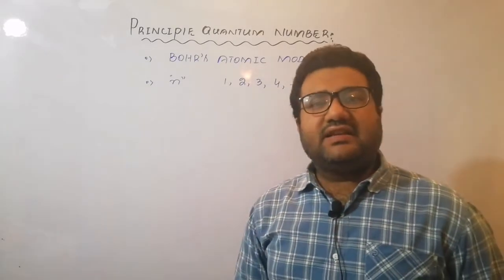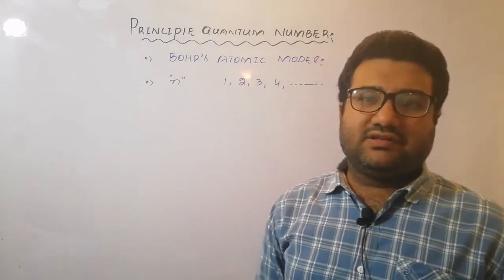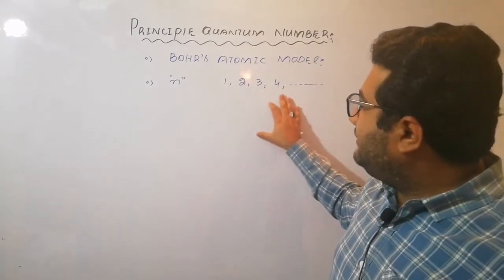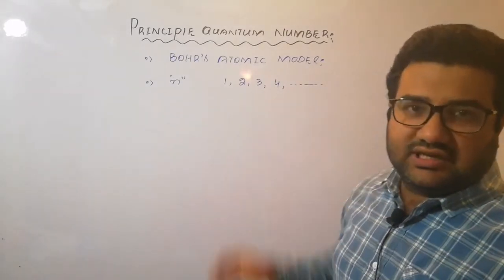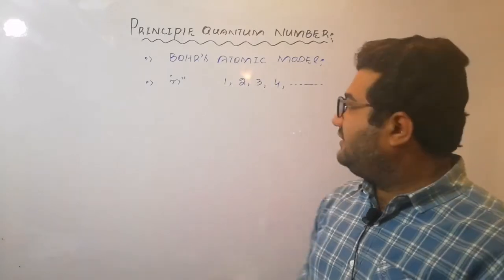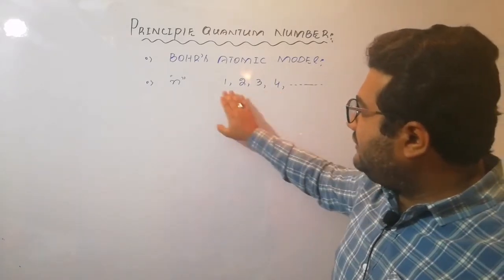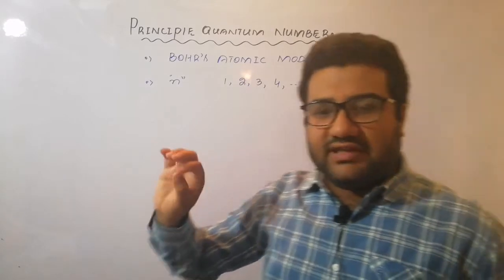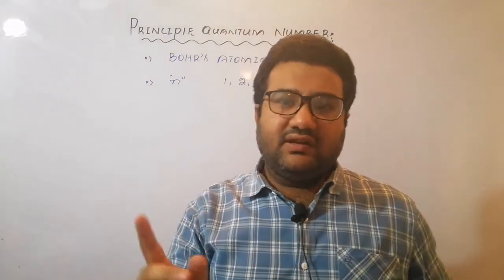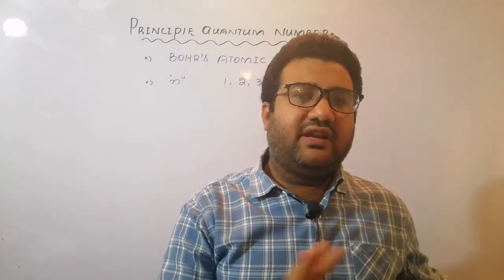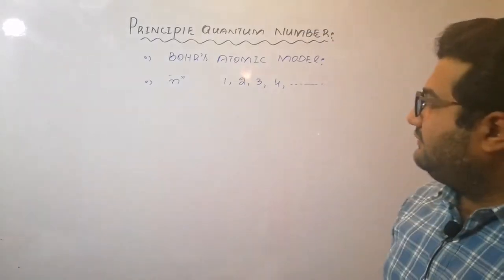This lecture is basically for FSC students, so I will keep myself restricted up to the fourth shell or fourth energy level. That's why I've written just four values. The value of principle quantum number starts from 1 and goes to infinite values.